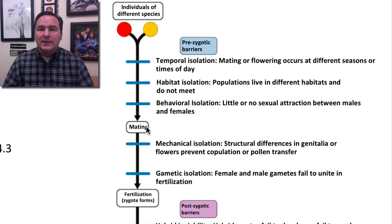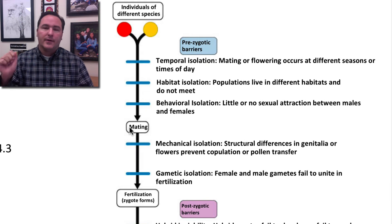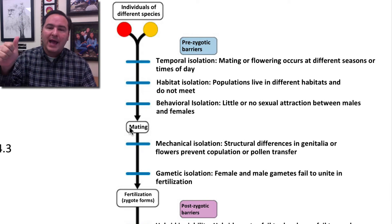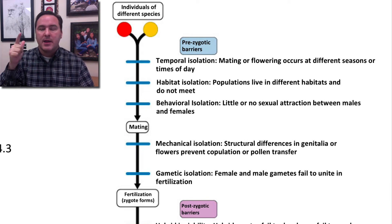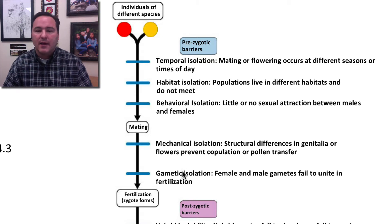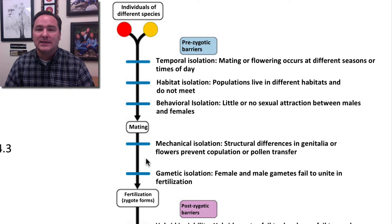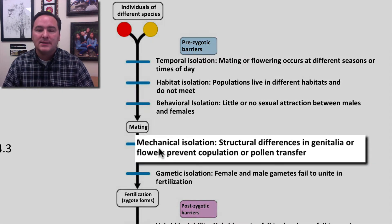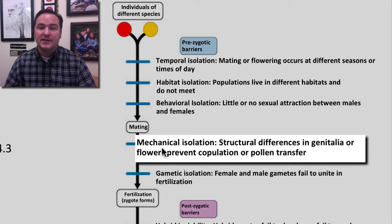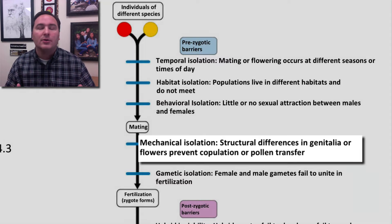If mating does occur — they're reproductively active at the same time, in the same area, and the chemistry is there — you can still have two more mechanisms that isolate these two species. The first is mechanical isolation, where there are structural differences in the genitalia that prevent copulation or pollen transfer from occurring.